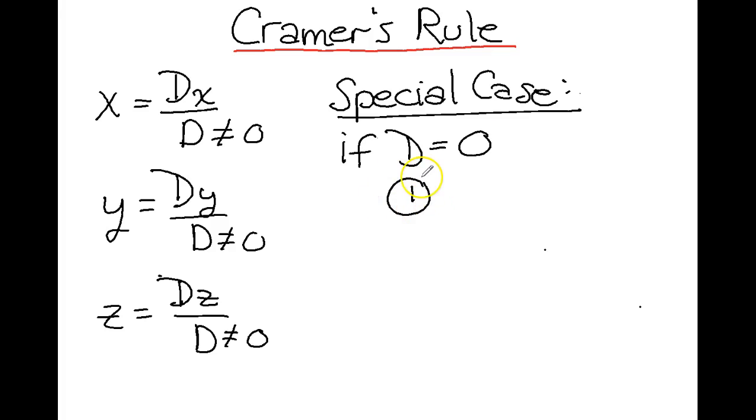We need to check whether we have a no-solution case or we have an infinite number of solutions. So if we have no solution to a system, we will find that D equals zero. I should say special cases because we have two.